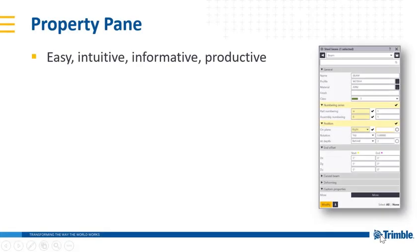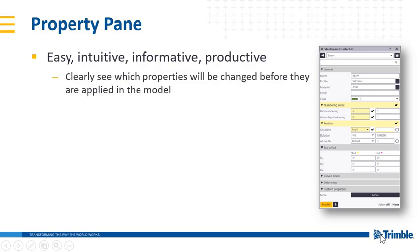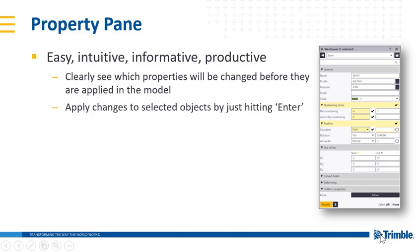Property Pane is going to make your modeling really powerful, really easy, and I think it's going to help reduce errors because you can see immediately what needs to be modified and what will be changed before those changes are applied. It's really easy to make those changes — you don't have to move over and click the modify button, you can just modify them instantly by hitting enter.